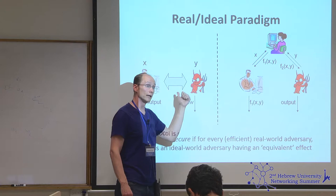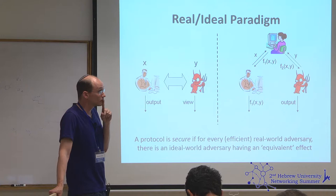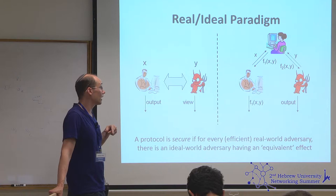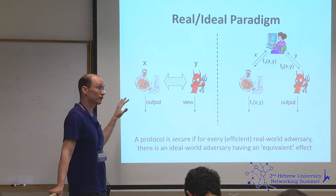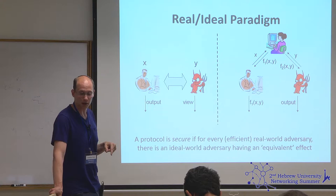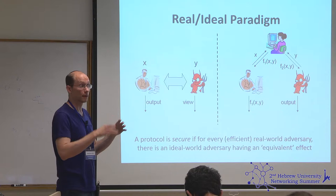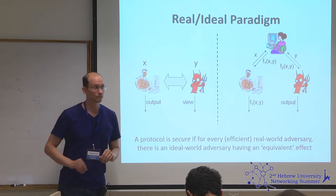If you have the right definition, it composes: if you run a secure protocol ten times in a row, it's equivalent to doing ten computations of the ideal functionality. That holds for sequential composition; things get a little messier when you talk about interleaving, running things in parallel, or arbitrary scheduling. But roughly speaking, it does compose under the right conditions.